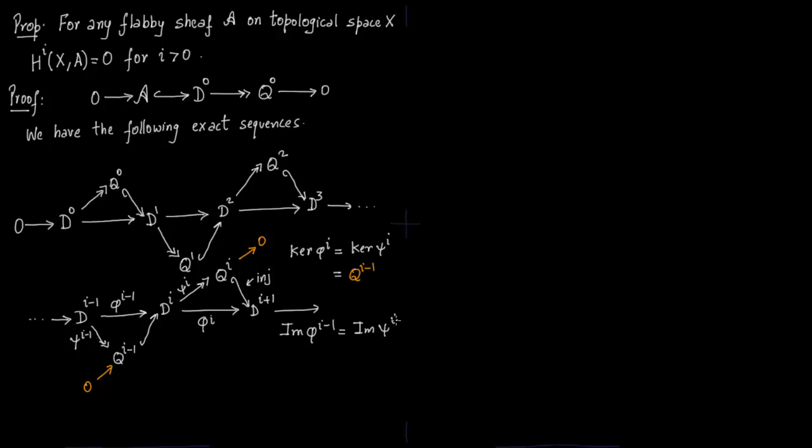Again because the map from QI minus 1 to Di is injective, QI minus 1 completely goes into Di. We also have this short exact sequence from QI minus 2 to Di minus 1. Then 0 to QI minus 2 to Di minus 1 to QI minus 1. So you can see the image is nothing but QI minus 1.